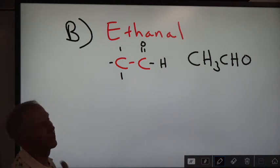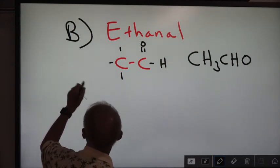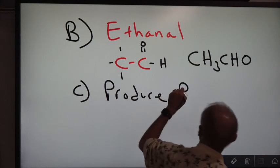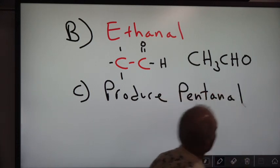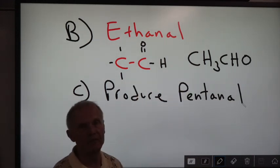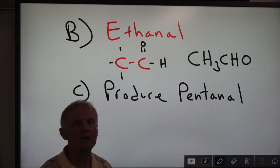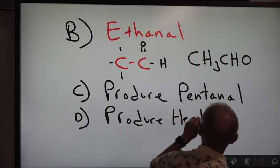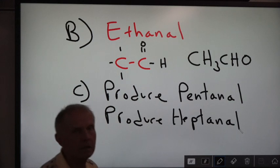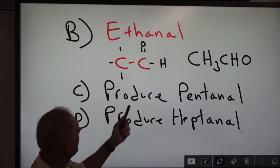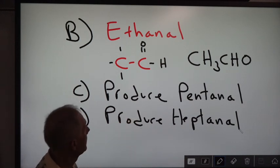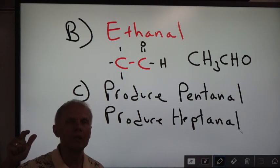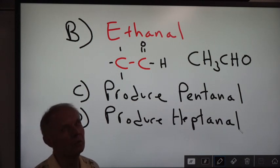For C and D, you are going to produce pentanal — give me the structural formula and the molecular formula for pentanal. And the other one I want you to make is heptanal — structural and molecular formula. So you have two organic acids to produce and two aldehydes to produce.